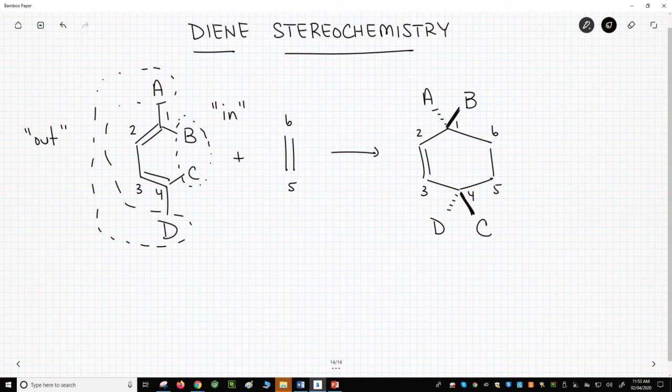Groups that are out will be cis to one another in the cycloadduct. Groups that are in will also be cis. In our product, the two in groups, B and C, are cis.